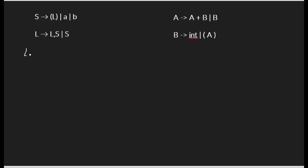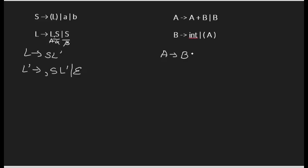L goes to: A is L, alpha is comma S, and beta is S. So L goes to S L-prime, and L-prime goes to comma S L-prime or epsilon. For the next grammar, A goes to B A-prime, and A-prime goes to plus B A-prime or epsilon. B does not appear as the leftmost symbol, so no conversion needed there. Left recursion — done.